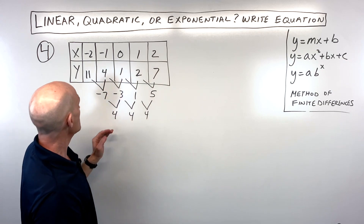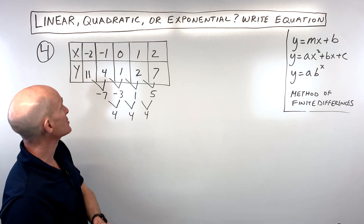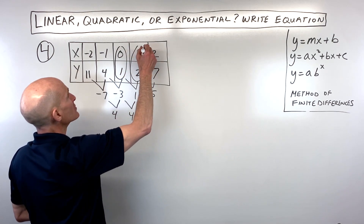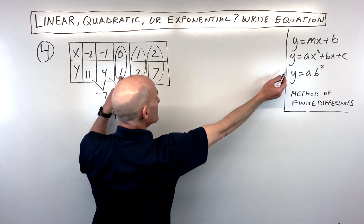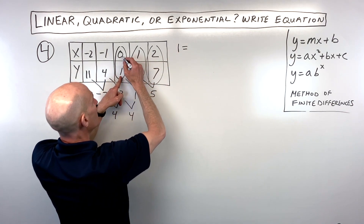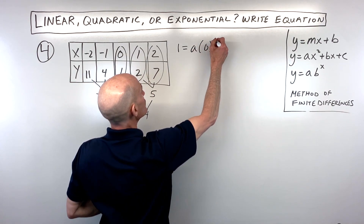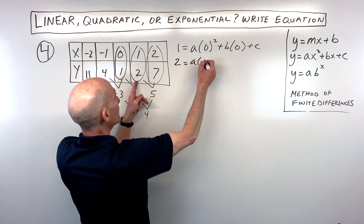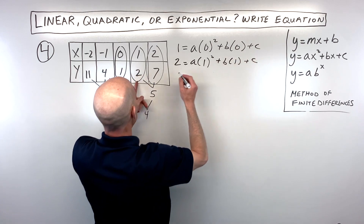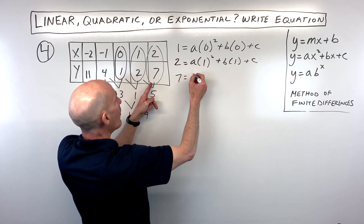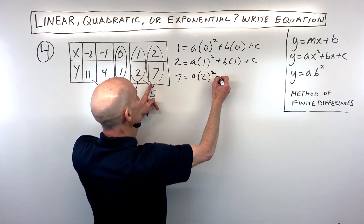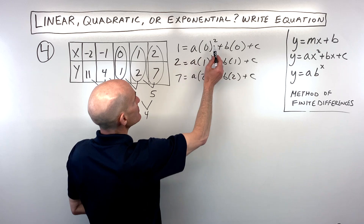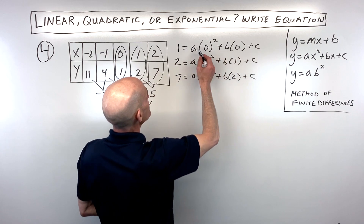We're going to write a system of equations using three points: (0, 1), (1, 2), and (2, 7). For the first point: 1 equals a times 0 squared plus b times 0 plus c, which simplifies to c equals 1. For the second point: 2 equals a times 1 squared plus b times 1 plus c. Since c equals 1, that gives us a plus b equals 1. For the third point: 7 equals 4a plus 2b plus 1, which gives us 4a plus 2b equals 6.